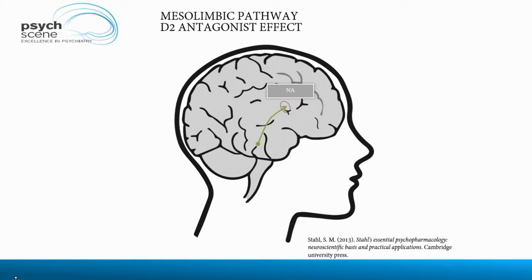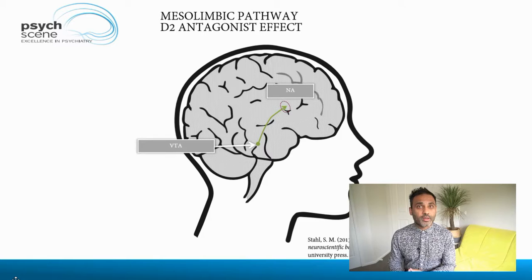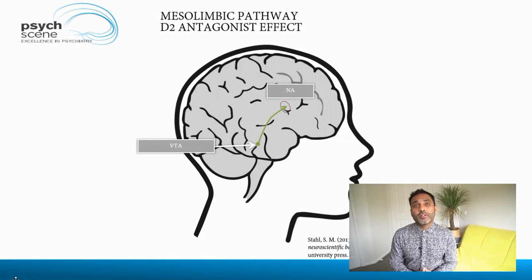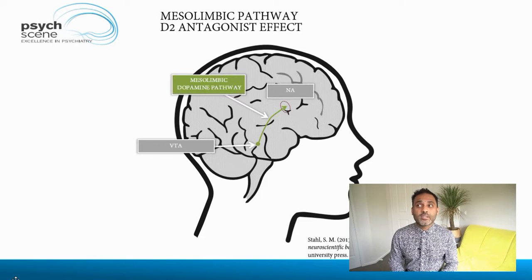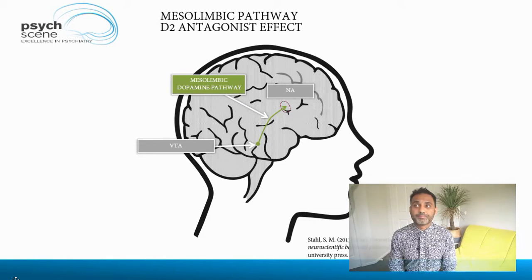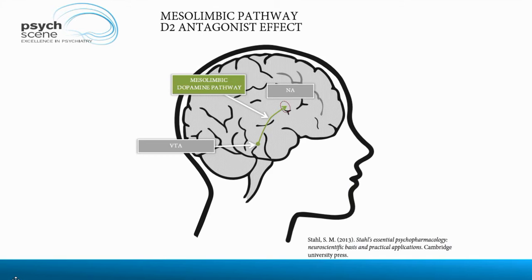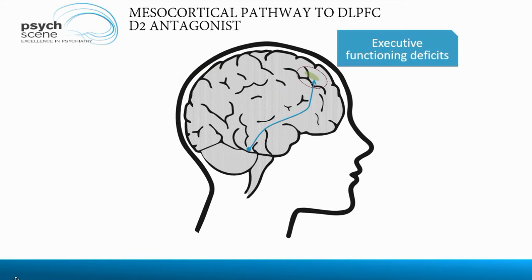Most medications prescribed are antipsychotic medications. Antipsychotic medications block the dopamine D2 receptor. Briefly, when we block the mesolimbic dopamine pathway, we treat positive symptoms — and that's what we want to do in schizophrenia. It's blocking D2 in the mesolimbic dopamine pathway.